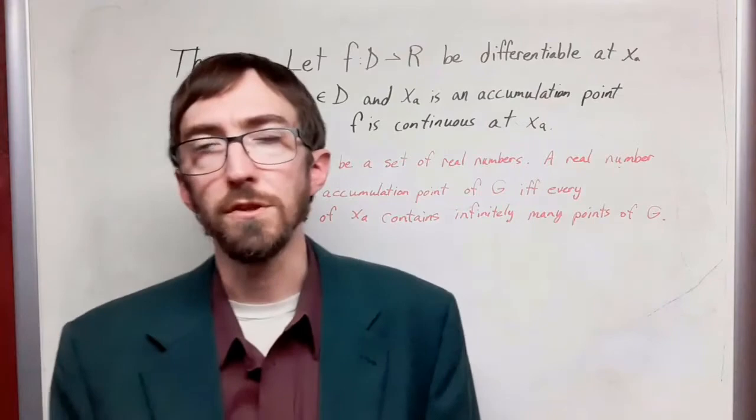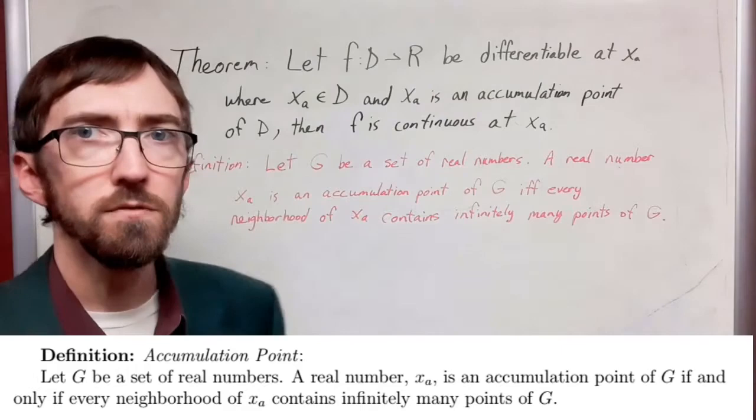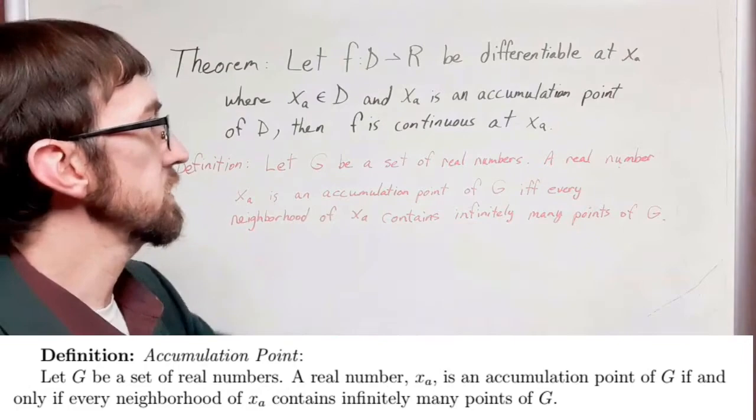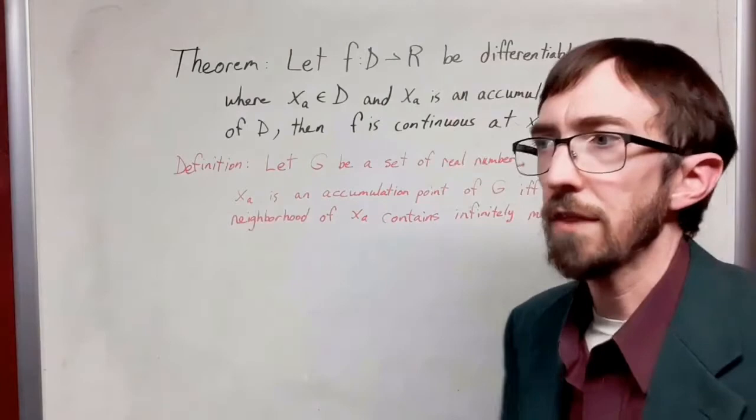Some of you may not be familiar with the term accumulation point, so I want to discuss that a little bit. Here is the definition: let g be a set of real numbers. A real number x sub a is an accumulation point of g if and only if every neighborhood of x sub a contains infinitely many points of g. This is a term and a phraseology that you may see in a couple of different mathematics courses.